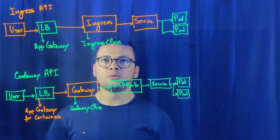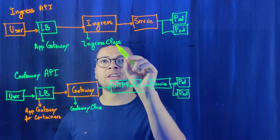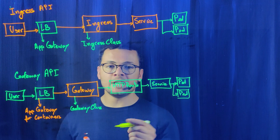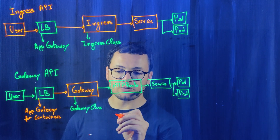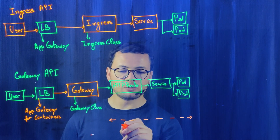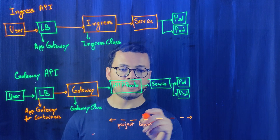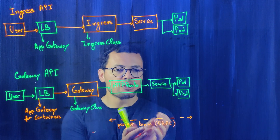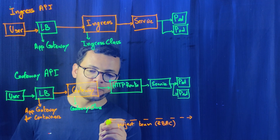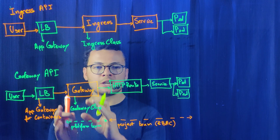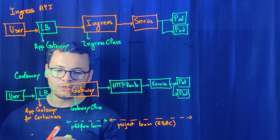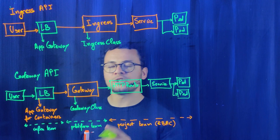Doing this has multiple advantages. The first advantage is the separation of concerns. Before with the Ingress API, it wasn't clear if the Ingress resource should belong to the project team or the platform team. Now with the Gateway API, we know that the HTTPRoute is the responsibility of the project team and lives within the namespace managed by that team. So the service, pods, deployment, and HTTPRoute are all part of the project team. The Gateway and GatewayClass would be managed by the platform team, and the load balancing itself would be the responsibility of the operations or infrastructure team.